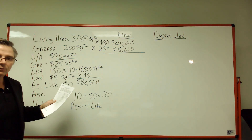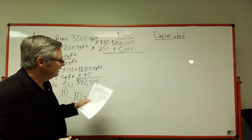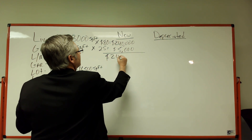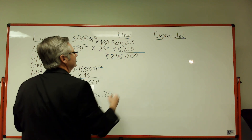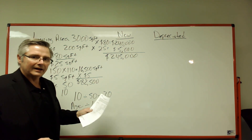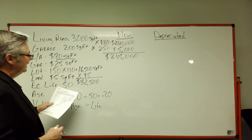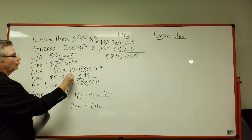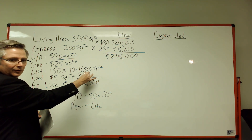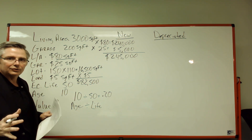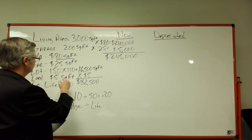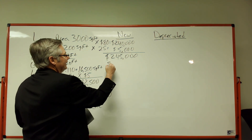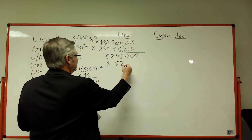Just to build that house — not including the land yet — with the garage, that's $245,000. That's the brand new cost of that house. Now let's figure out the land. The land is 150 by 110, or 16,500 square feet. The question says it's $5 a square foot, so we multiply that times $5.